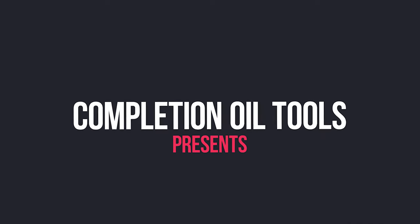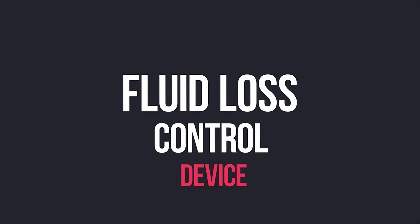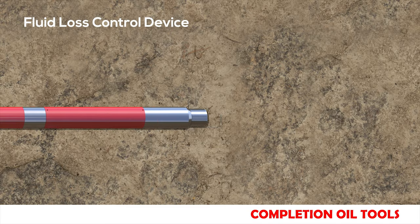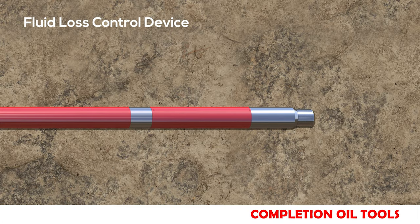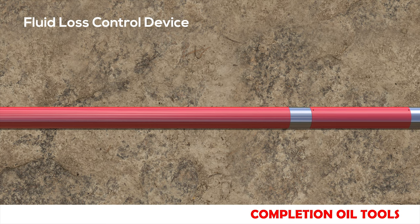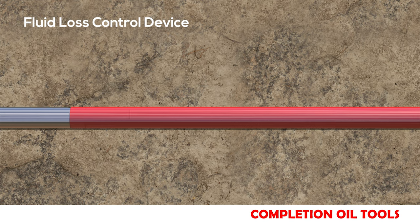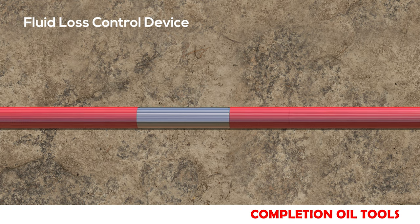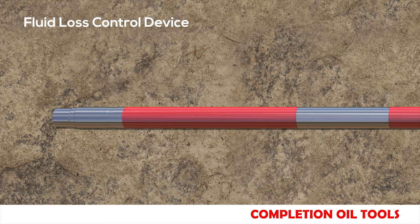Completion oil tools presents the Fluid Loss Control Device. The tool provides bi-directional isolation between two pay zones. The valve is suitable for deep water applications and can be used with liner hanger completions, gravel pack systems, frack pack systems, sand control systems, and for both open and cased hole completions.